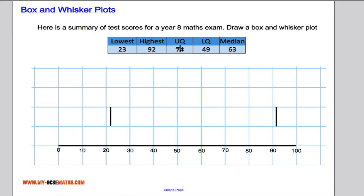I'm also told that the upper quartile and lower quartile are 74 and 49 respectively. So if I go to 74, which is around about here, draw a line up and 49 for the lower quartile, which is around about here, I can then complete the box part. So just join up each of the upper and lower quartiles.